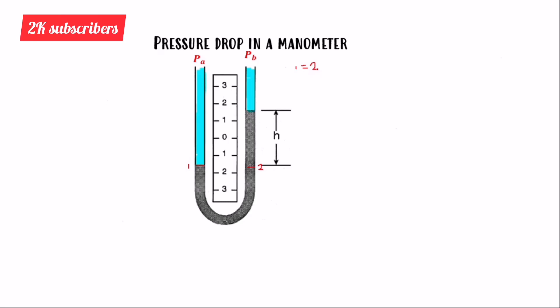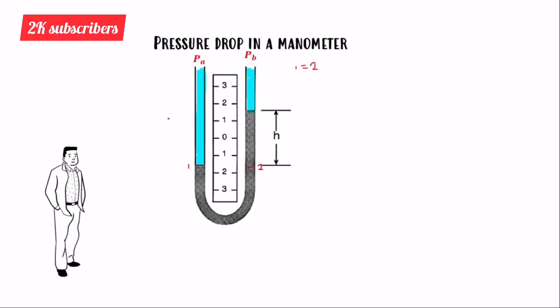This principle helps us find the pressure difference in the fluids. Looking at the setup, we have two fluids: fluid A is water and fluid B is mercury. They gave us the height of fluid B from one level to another as H.